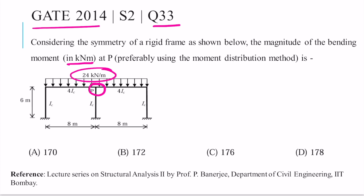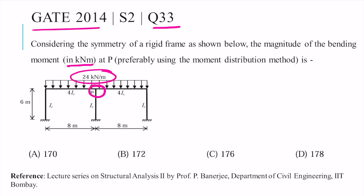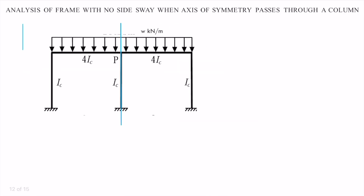It's a two-mark question. For this type of problem, you can refer to the lecture series on Structural Analysis 2 by Professor P. Banerjee, Department of Civil Engineering, IIT Bombay. Before discussing the solution, I want to discuss one important concept that will help solve this problem in much shorter time. This is a special case involving the analysis of a frame with no sway when the axis of symmetry passes through a column.